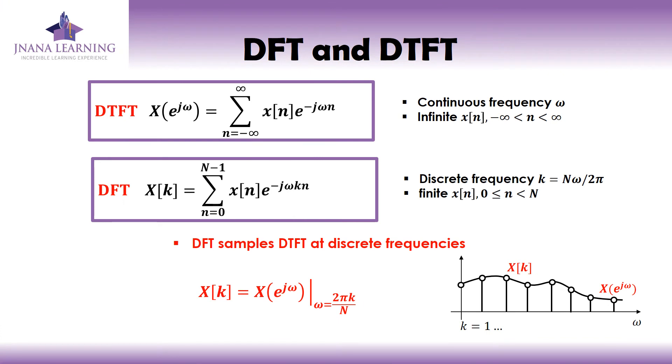So here is the expression for DTFT and DFT. Discrete Time Fourier Transform we represent as X(e^jω) equals summation n equals minus infinity to infinity, x[n]e^(-jωn). Here omega is a continuous frequency, and x[n] is an infinite sequence or infinite signal ranging from minus infinity to infinity.